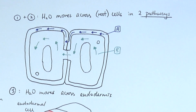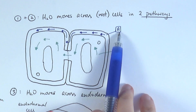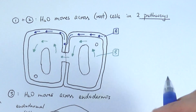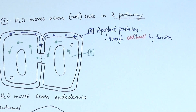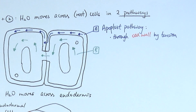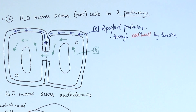There are two pathways. The main pathway that water uses to move across cells is method A, which is mainly through the cell wall — we call this the apoplast pathway. Water moves through the cell wall by tension, which is the attraction force between water molecules. This is the main pathway because it's the simplest and easiest route with very little in the way of the water molecule.